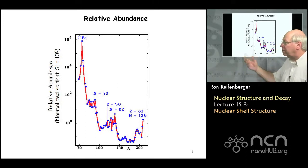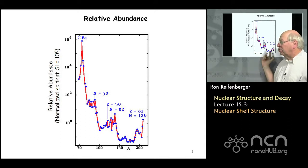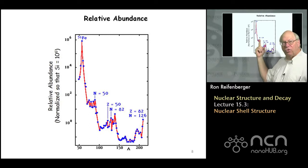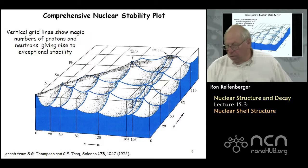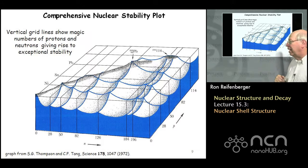You can also look at the relative abundance of different nuclei. Here is relative abundance versus atomic mass number A for mass numbers greater than 50. There is a very high relative abundance for iron-56, which is an extremely stable nucleus. But again, the neutron numbers and proton numbers 50, 82, and 126 keep appearing repeatedly. This plot, probably the most comprehensive plot for nuclear stability I'm aware of, was published in 1972. It shows peaks in stability at these vertical lines representing specific neutron and proton numbers, suggesting these magic numbers of neutrons and protons produce very stable nuclei.